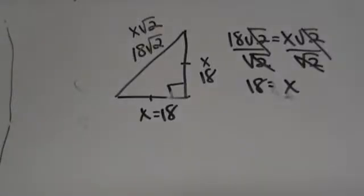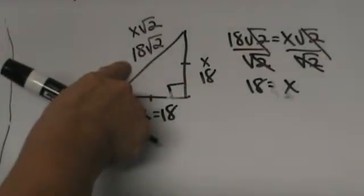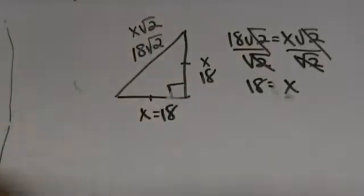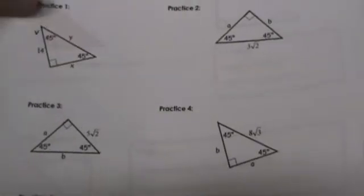So those are the patterns — label the hypotenuse x√2 and solve for x by dividing both sides by √2. That is how to solve going forward and backwards. Now let's look at a couple of practice problems. I am going to work some of these with you to give you a chance to practice going forward and backwards, and then you can check the even ones.